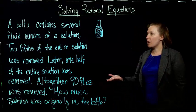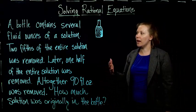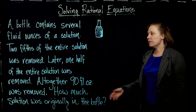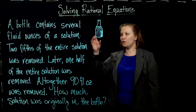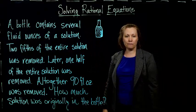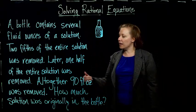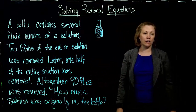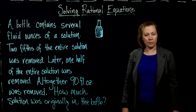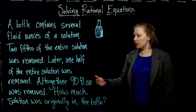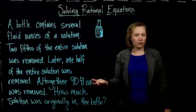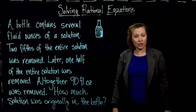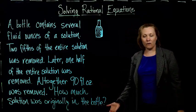I've got a problem here where I had a bottle that contained several fluid ounces of a solution. Two-fifths of the entire solution was removed. Later, one-half of the entire solution was removed. Altogether, 90 fluid ounces were removed, but we don't know how much was originally in the bottle. That's what we want to figure out.